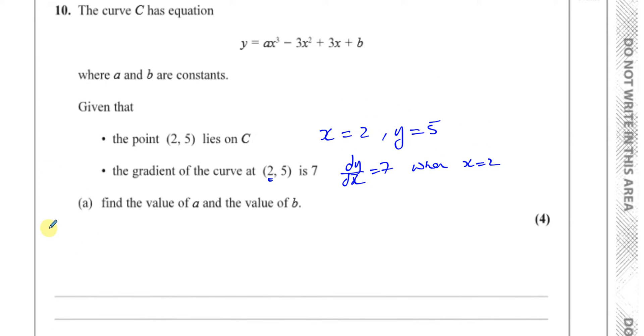When X equals 2, Y equals 5. So let's put those in the equation: 5 equals A times 2 cubed minus 3 times 2 squared plus 3 times 2 plus B. So you have 5 is equal to 8A minus 12 plus 6 plus B. So we have 5 is equal to 8A plus B minus 6. Therefore, we can say 8A plus B is equal to 11.